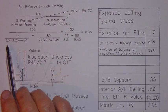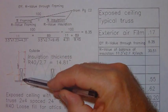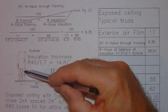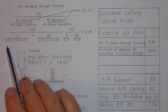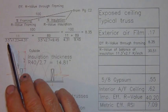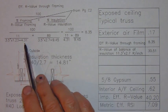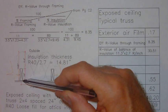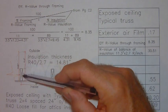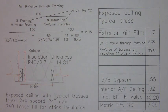Therefore, since our truss bottom cord is 3.5 inches deep, you would multiply 3.5 times 1.23 per inch, and we get an R-value of 4.31 for a 3.5 inch thick piece of construction framing.